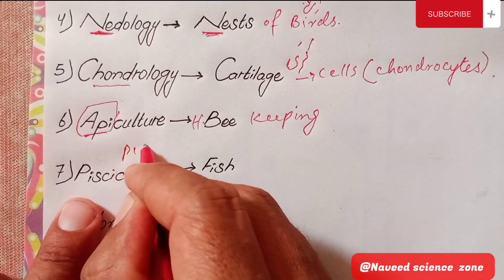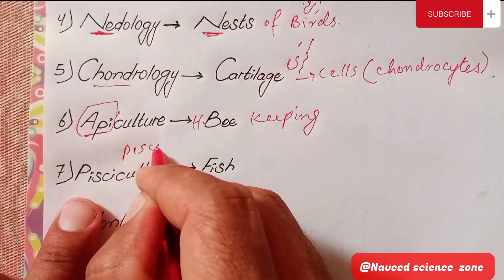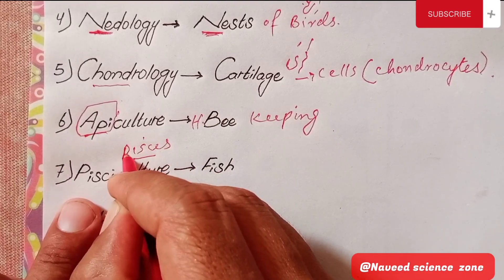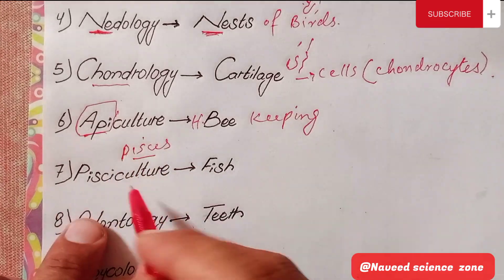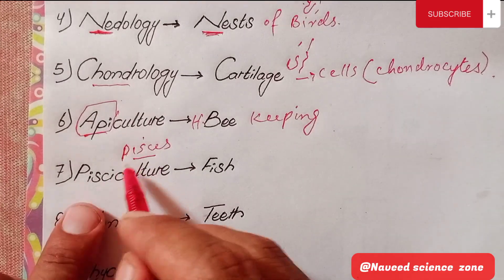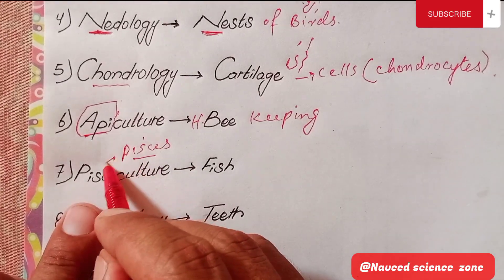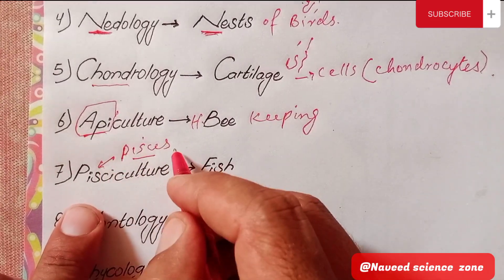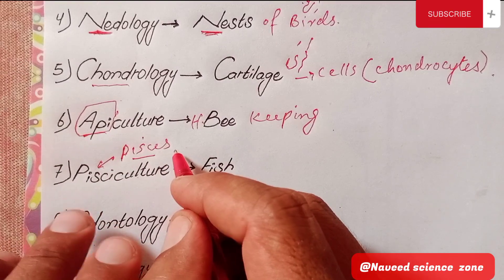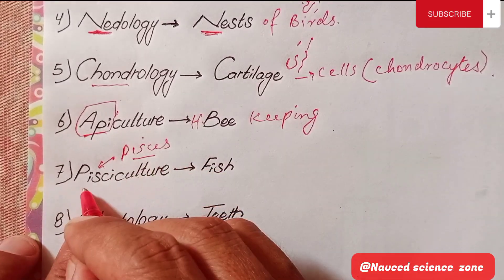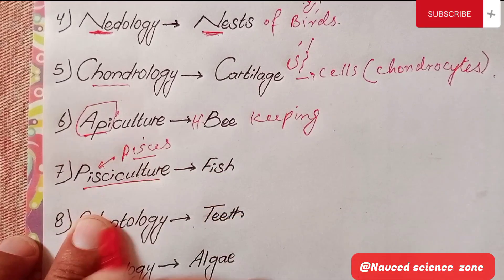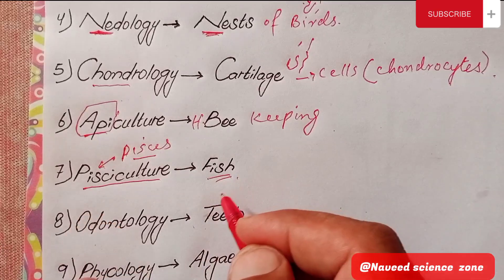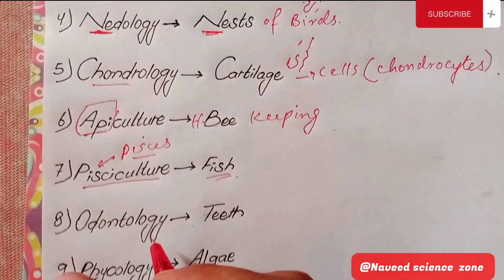The next branch covers Pisces, which is a vertebrate group. This includes both cartilaginous and bony fishes. Pisces as a group includes all fish classified under cartilaginous or bony categories.